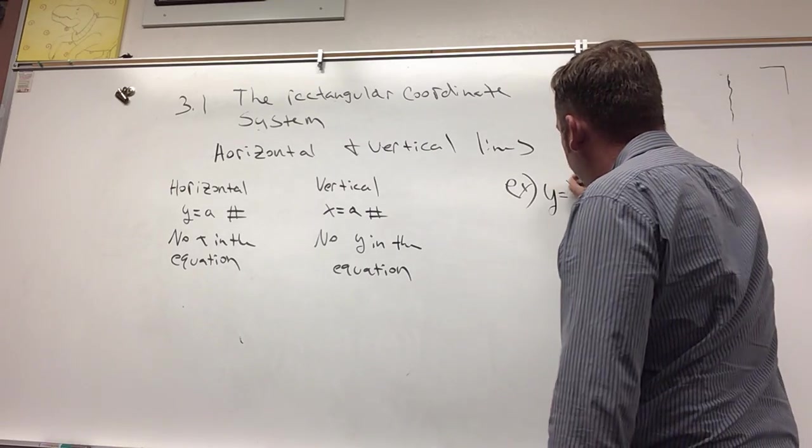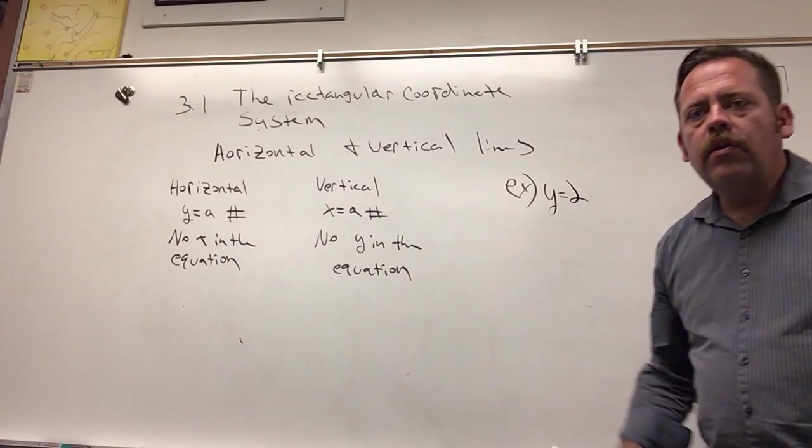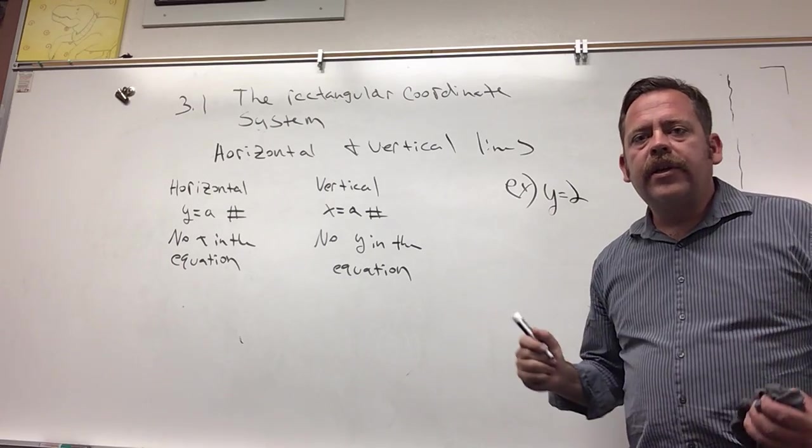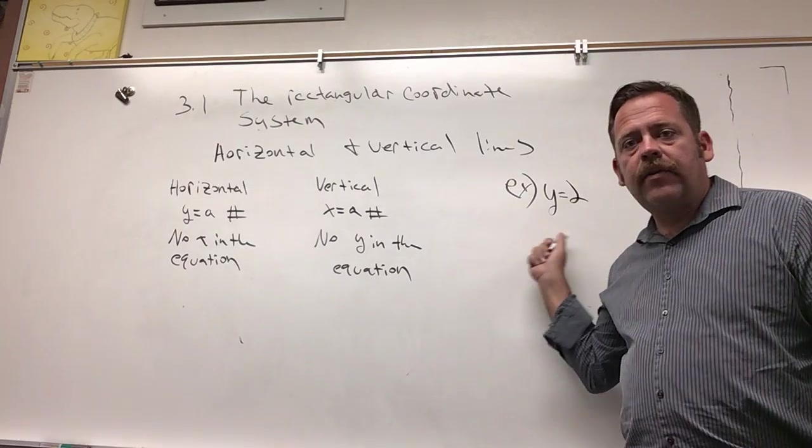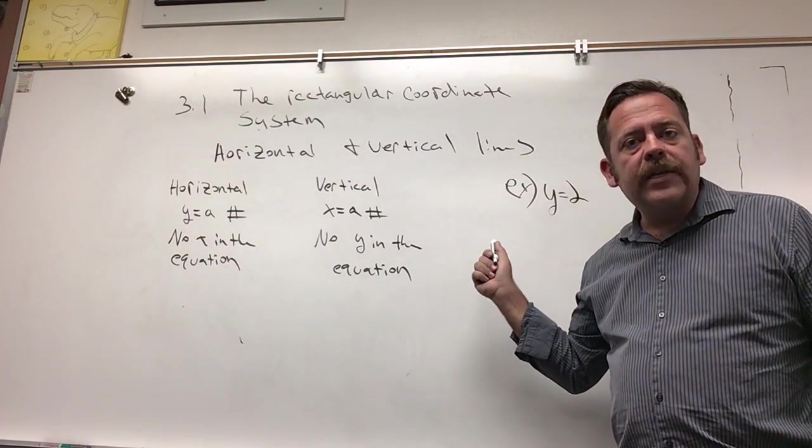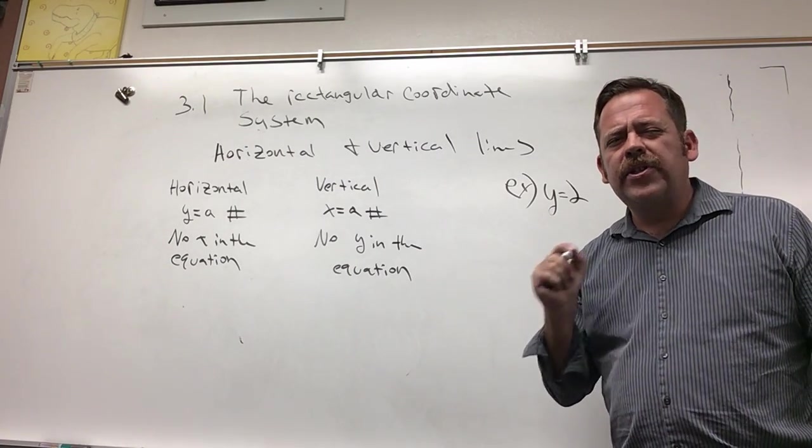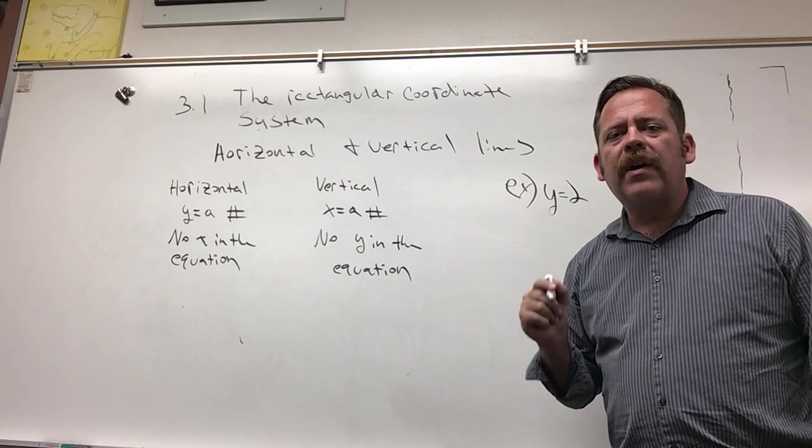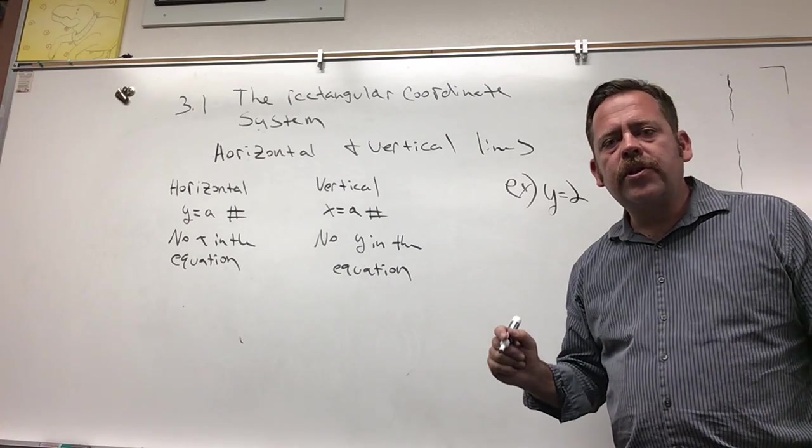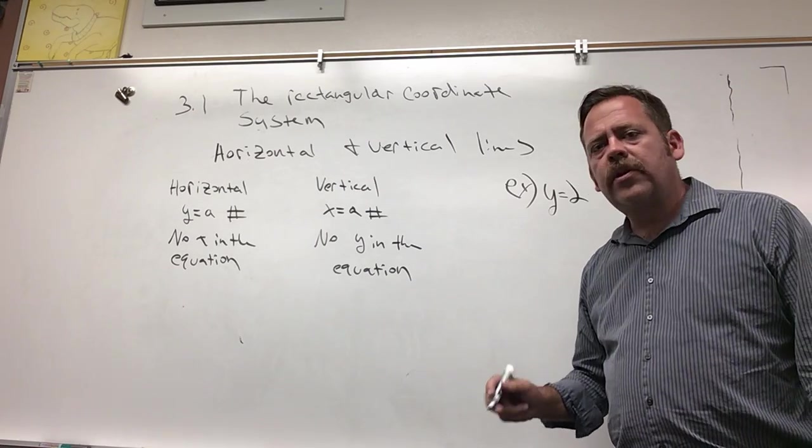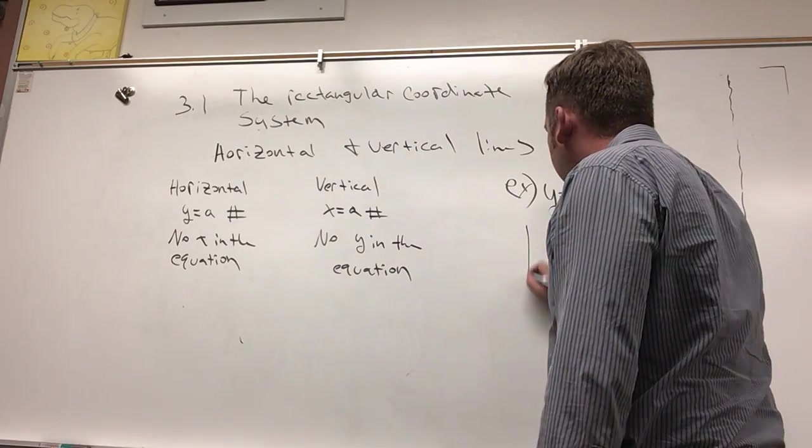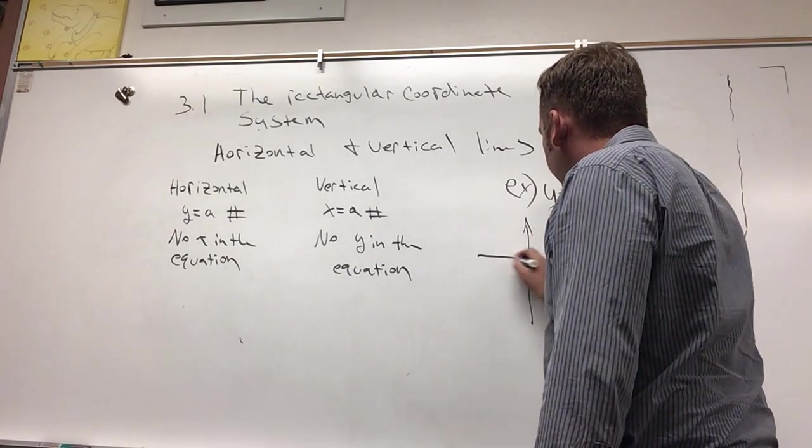Y equals 2. Notice for that particular equation there's no x in it, right? If there's no x in it and there's just y equals, it's going to be horizontal. I want you to understand why. Why would the line y equals 2 be horizontal? Well, let's graph it.